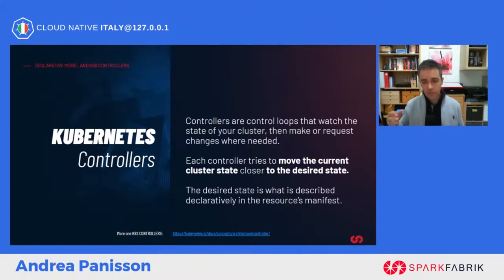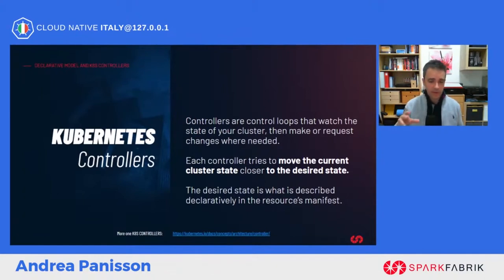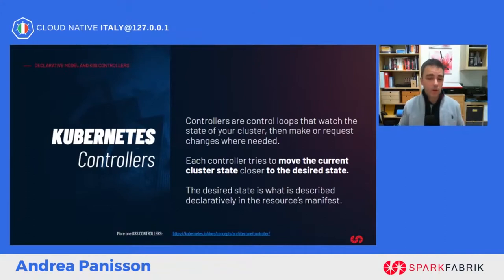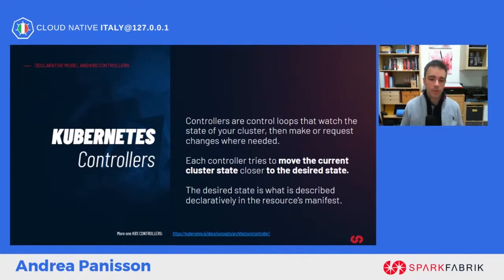For example, suppose I want to deploy an application based on Nginx. I write a YAML file and, since I want high availability, I declare that I want at least three replicas. I apply my manifest and that's all I need. Kubernetes will monitor the state of my application continuously, compare it to the desired state declared in the manifest, and work to bring the application to the desired state. This concept of desired state is key in the context of both GitOps and Kubernetes.